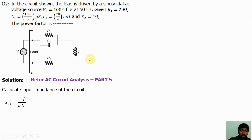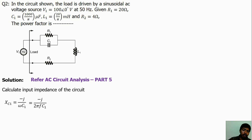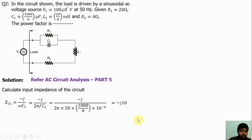If we know the capacitive reactance and inductive reactance, then only we can find the input impedance. Substituting: ω equals 2πF, which is the relation between angular frequency and linear frequency. Here, linear frequency is given in hertz. Substituting — 2πF value is π, capacitance value is 100 microfarads (10⁻⁶) — simplifying this equation, we get the answer as minus j10. So the capacitive reactance value Xc is minus j10.